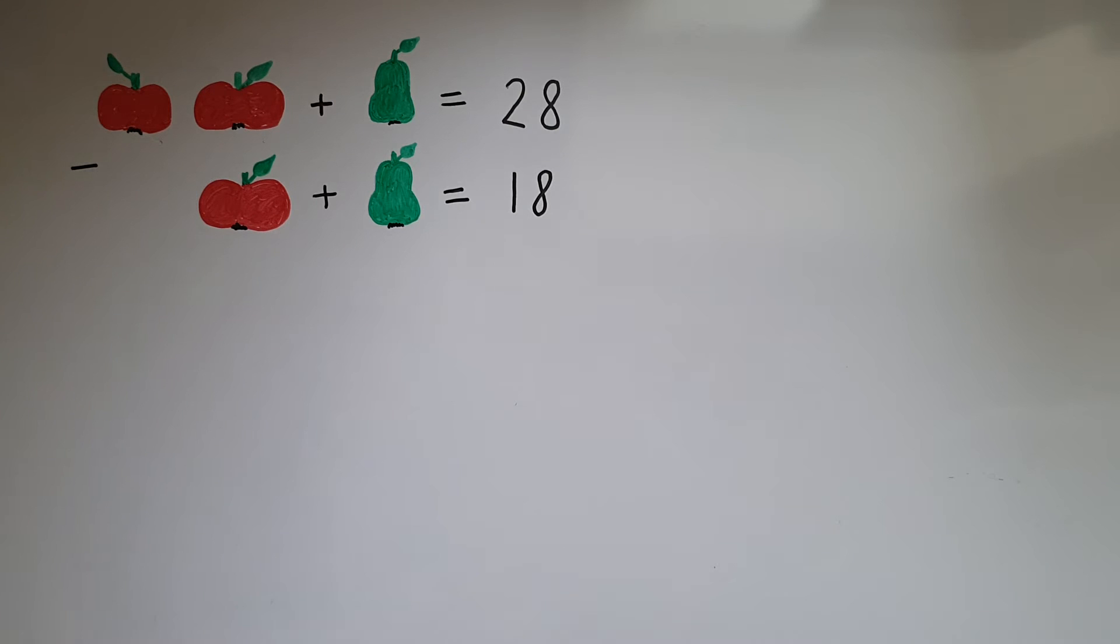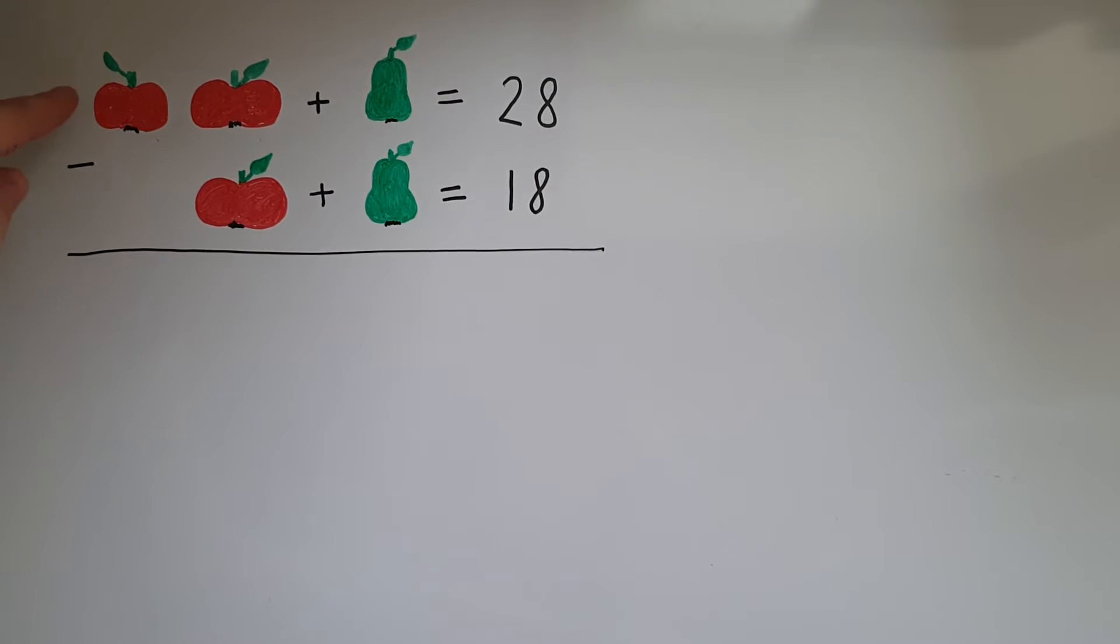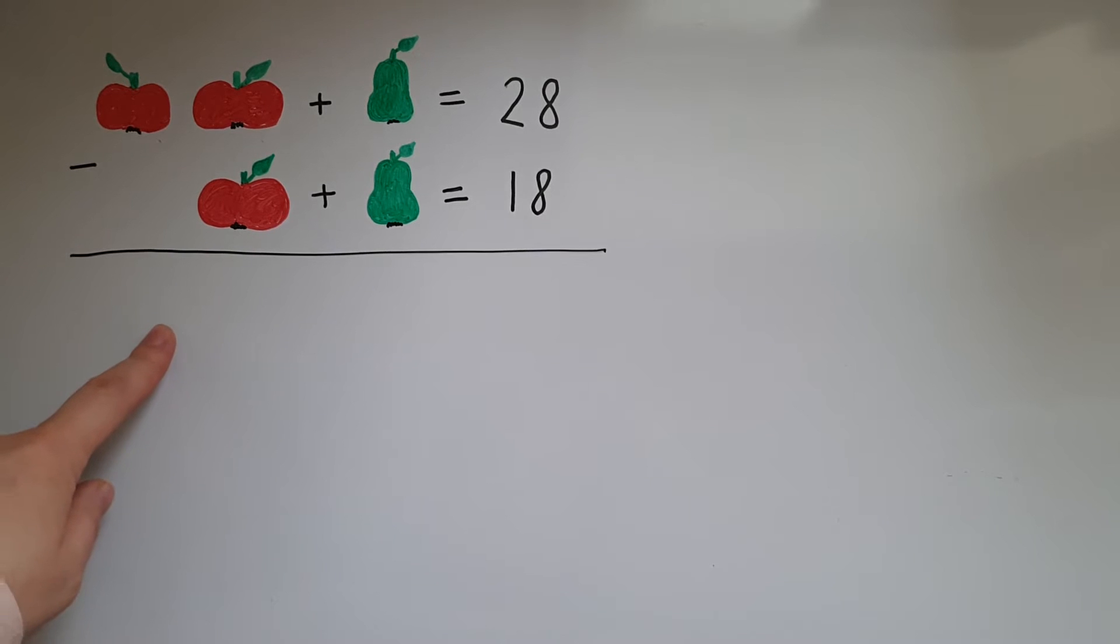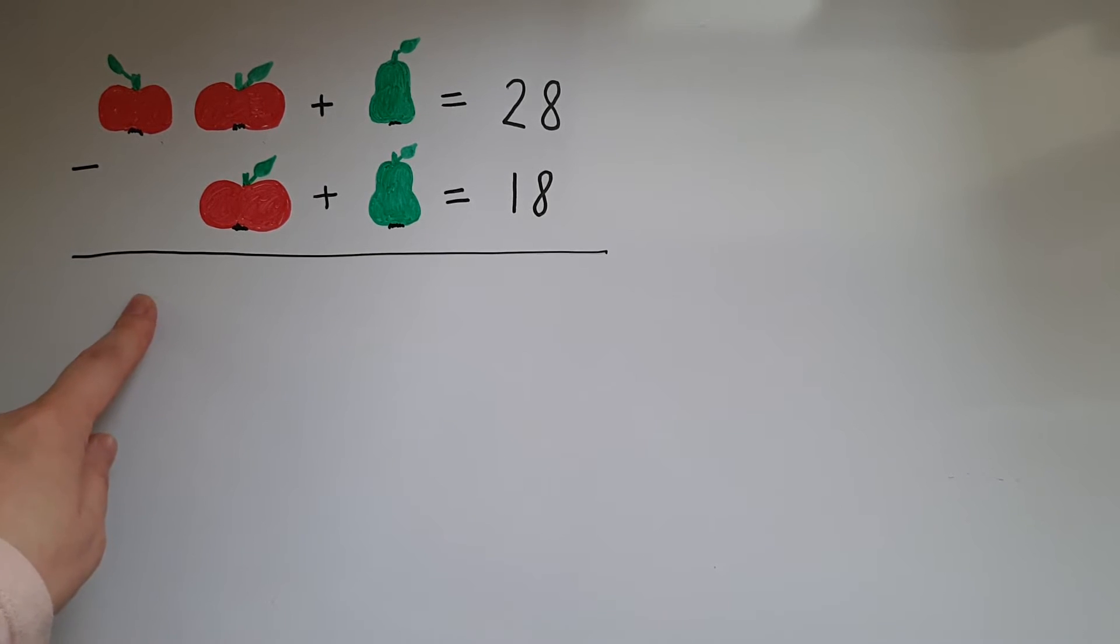I've subtracted. So if I subtract the second row from the first one, what I'm left with is just one apple being equal to 10.